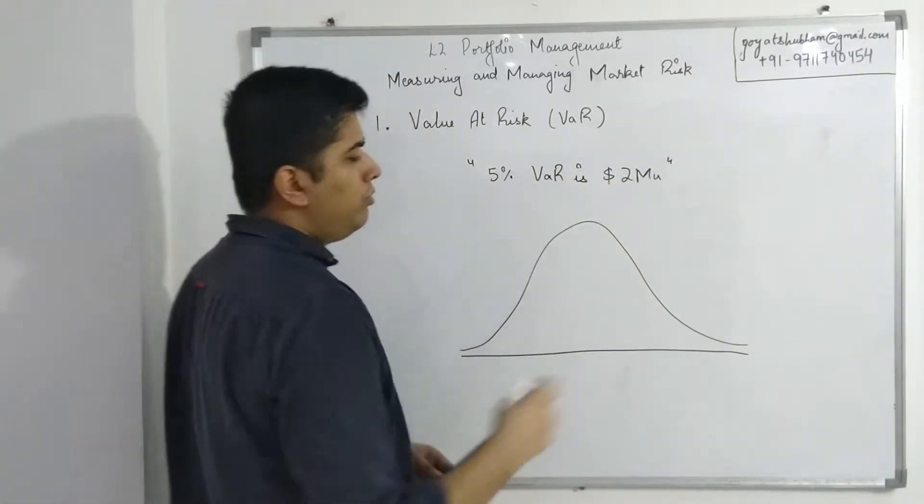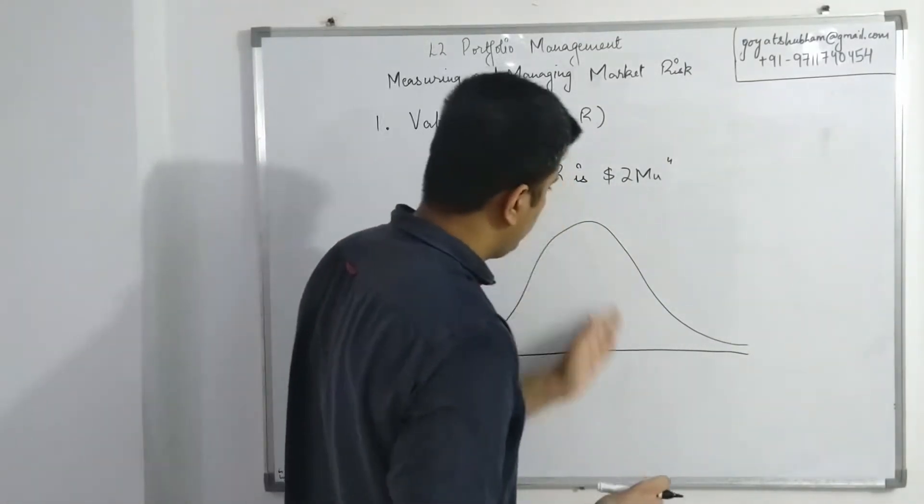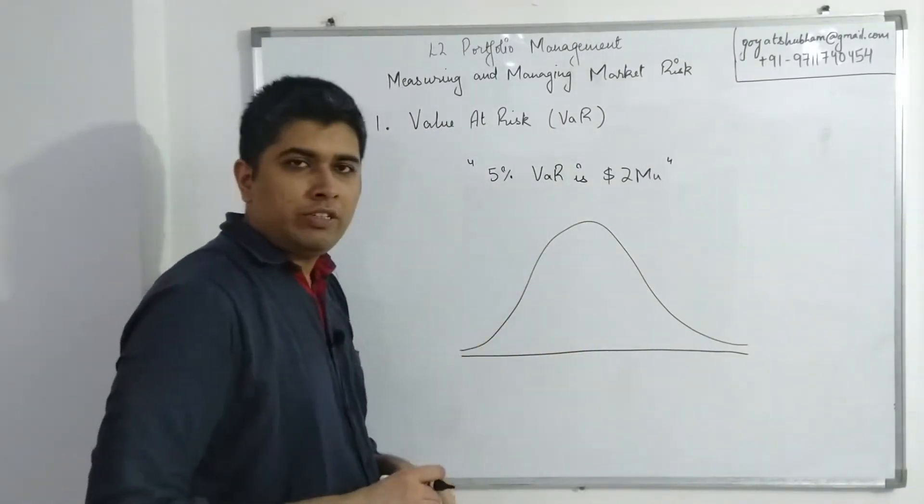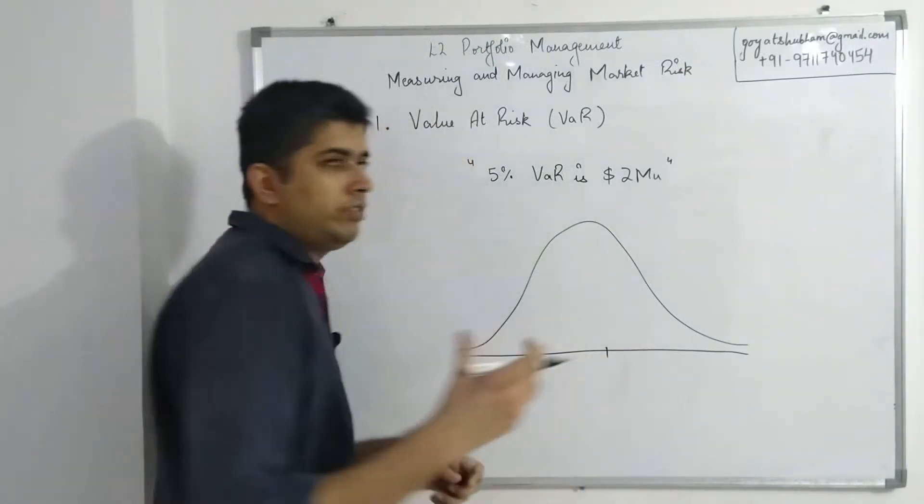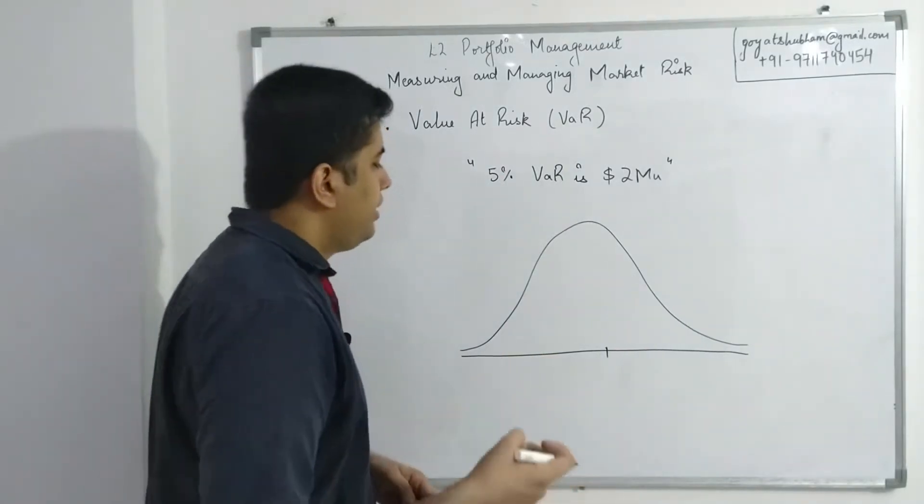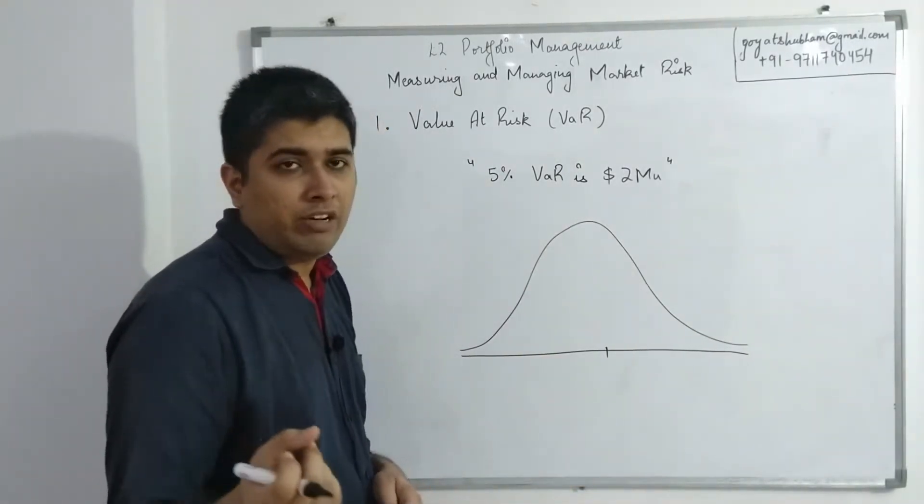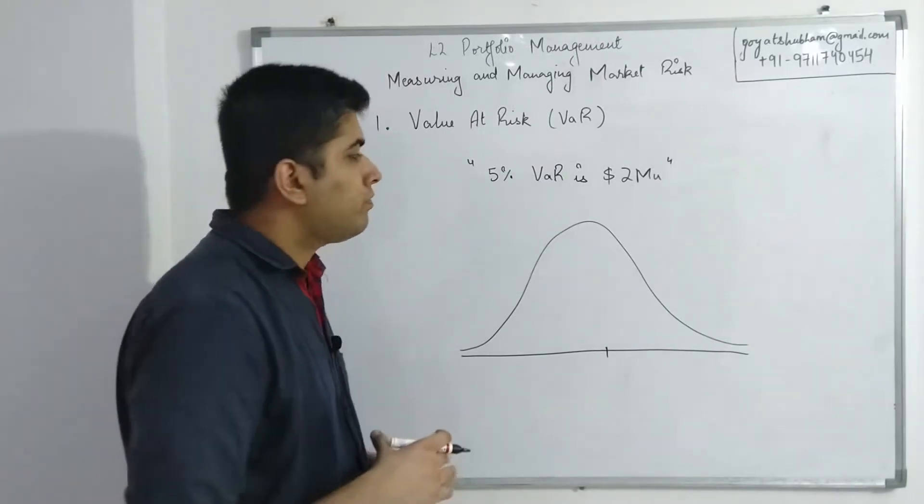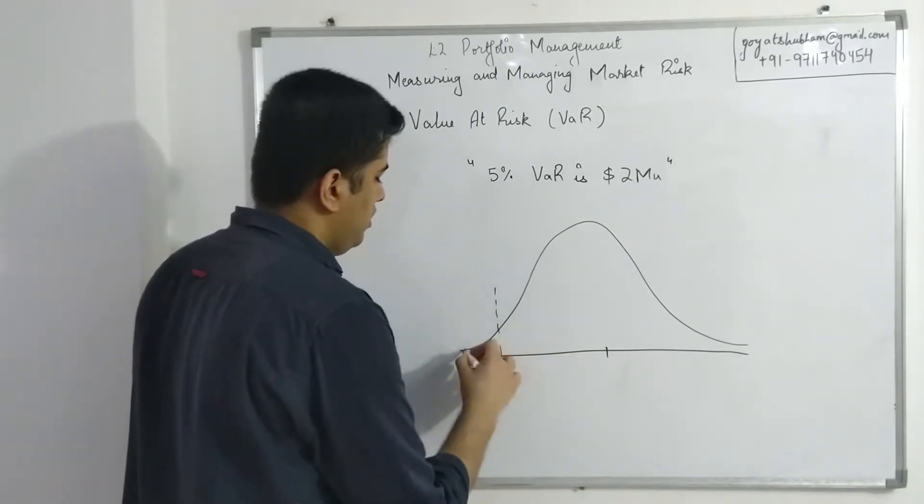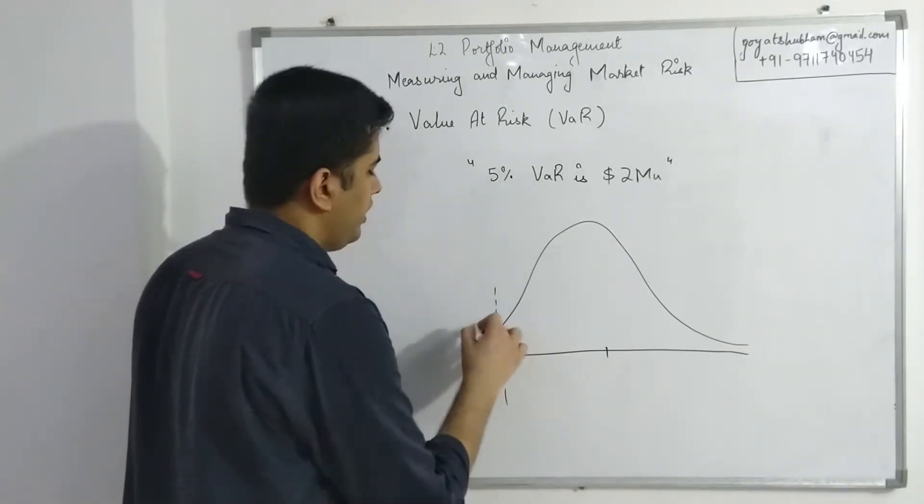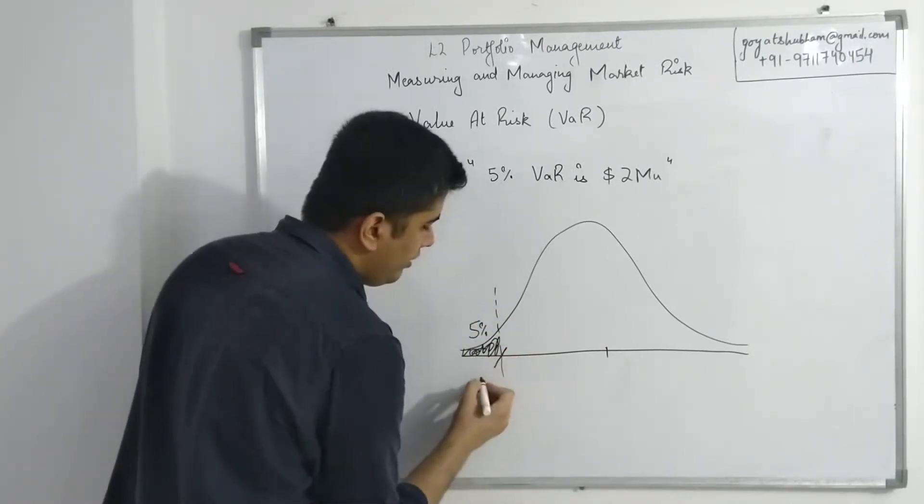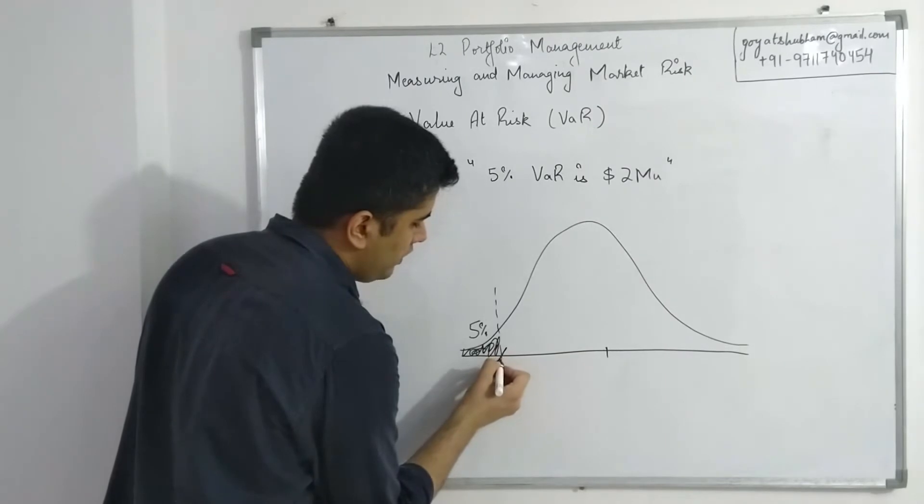So think of this as a normal distribution, slightly skewed in my drawing but I was intending it to be normal distribution. So if this is the normal distribution of all the profits that a portfolio can have, or let's say you have an investment, you're looking at what different returns you would get from an investment in terms of dollar value.